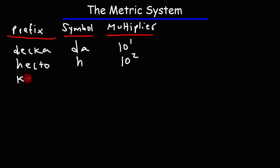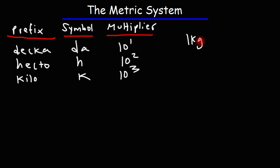Kilo is lowercase k, and it's 10 to the 3rd, or 1,000. What this means is that 1 kilogram is 1,000 grams, or 1 times 10 to the 3rd grams.